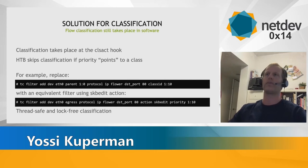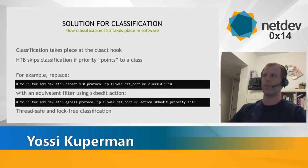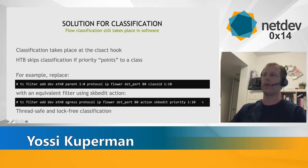We would like to move the classification out of the HTB QDisc itself to the cls_act egress hook. This means that the user now needs to configure the filters in a slightly different way than usual. For example, we would replace this filter with an equivalent one that writes the class directly to the SKB priority field, as in this example. This should work today without any code modification, as HTB examines the priority before performing the classification, and since the priority already defines the class, HTB skips the classification altogether.